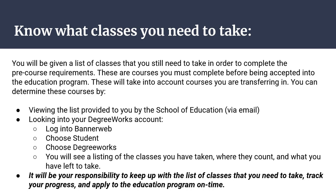You can also look up this information in your DegreeWorks account, which lives inside of BannerWeb. You would log into your BannerWeb account, choose Student and then DegreeWorks, and you'll see a listing of all the classes that you've taken, where they count, and what you have left to take — essentially the same thing as what you would be sent in the paper document.